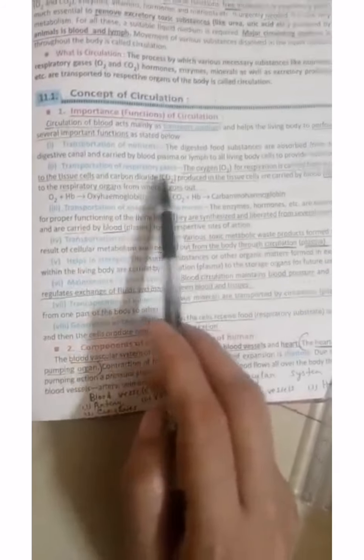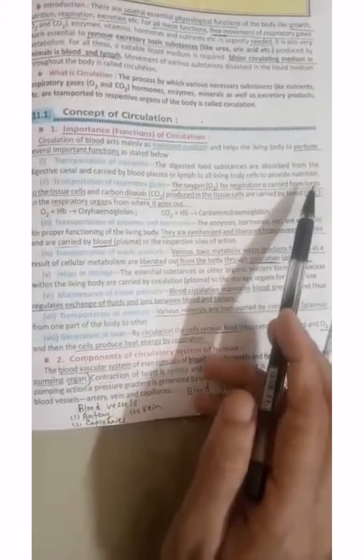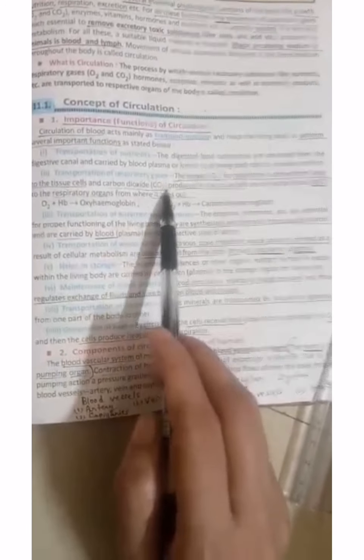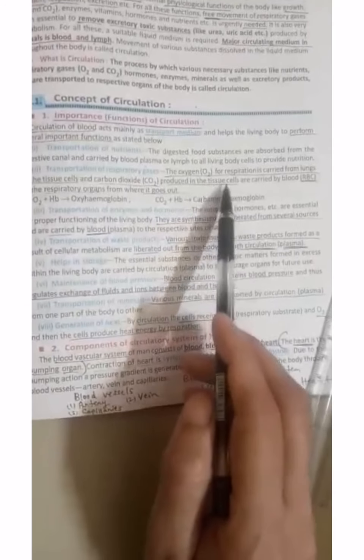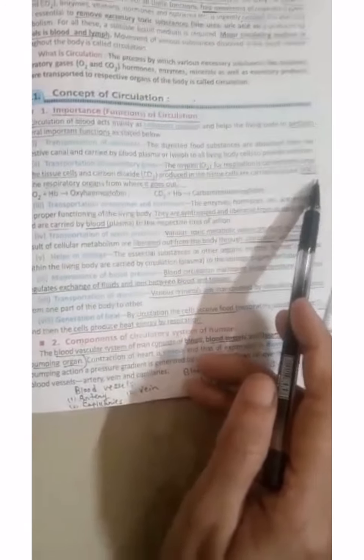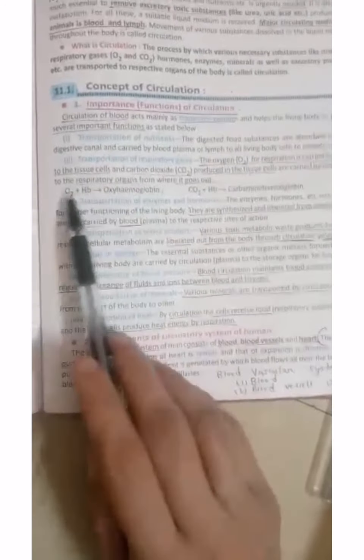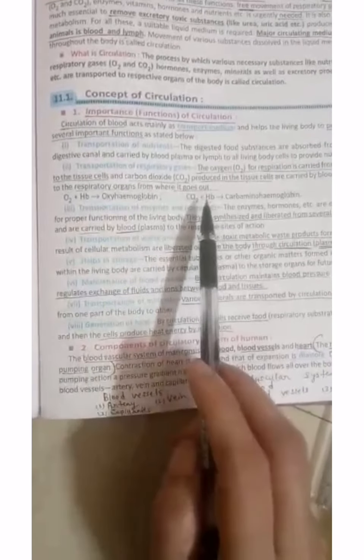Second is respiratory gases transportation. Oxygen for respiration will be carried from lungs to the tissue cells. And CO2 carbon dioxide which is produced in tissue cells will be carried with the help of RBC red blood corpuscles to the respective organs. So these two reactions you will see. Oxygen will combine with hemoglobin and carbon dioxide will combine with hemoglobin.